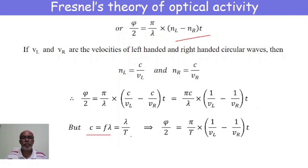Since c = fλ, we have c/λ = f = 1/T, where T is the period. Therefore the relation becomes φ/2 = (π/T)(1/v_L − 1/v_R)t.